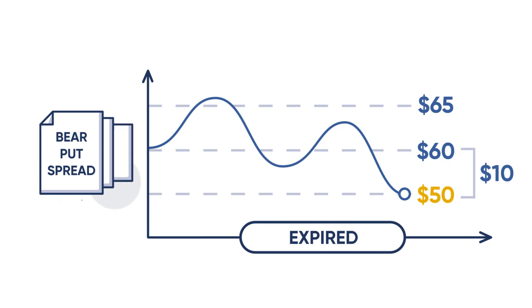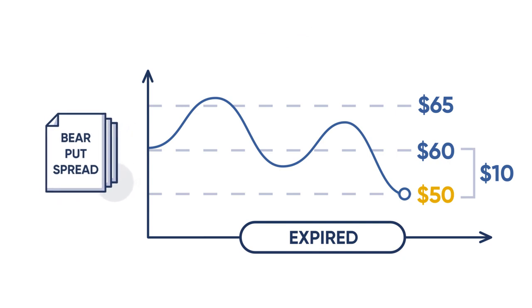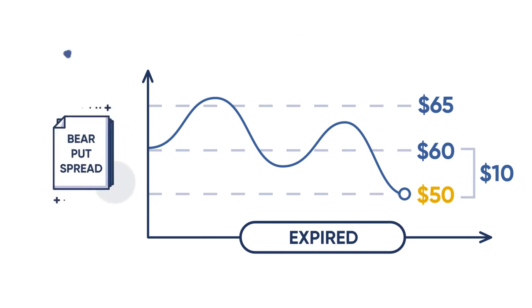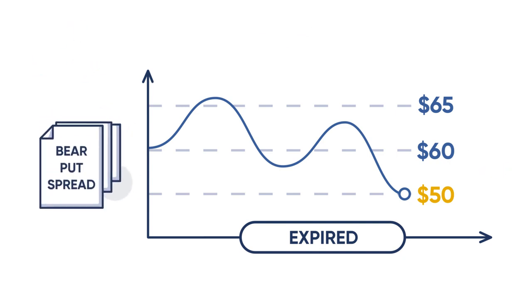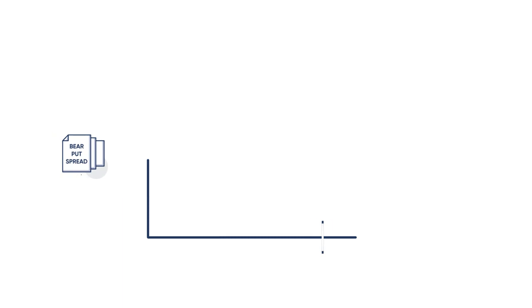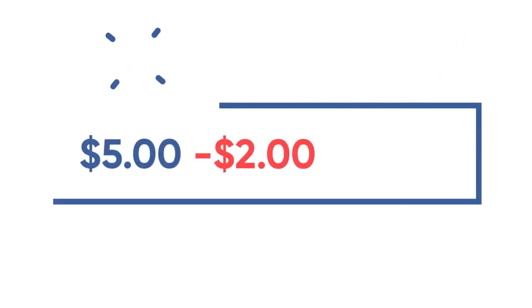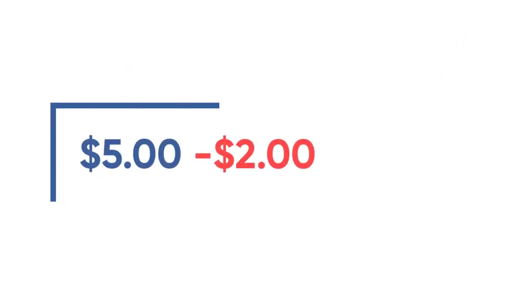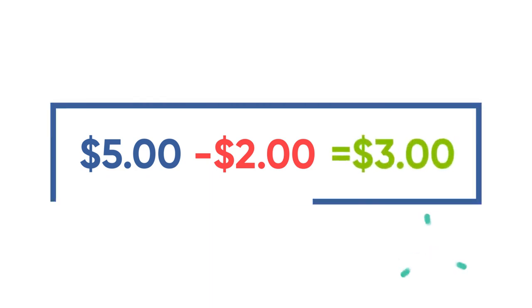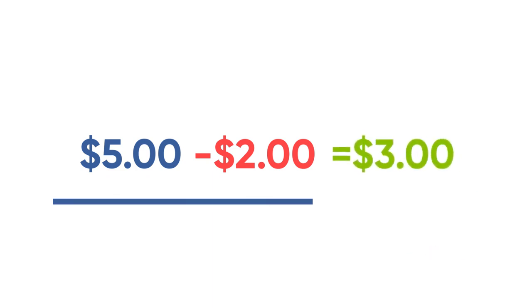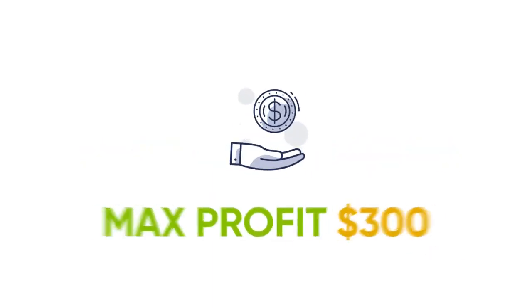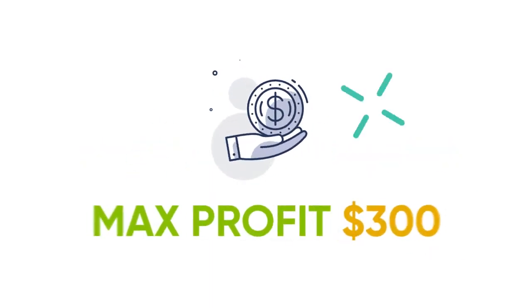When the long 65 and the short 60 puts are closed, you can see the spread reached its maximum value of $5 minus the $2 cost of the spread, thus giving the spread a maximum profit of $3 or $300 per spread.